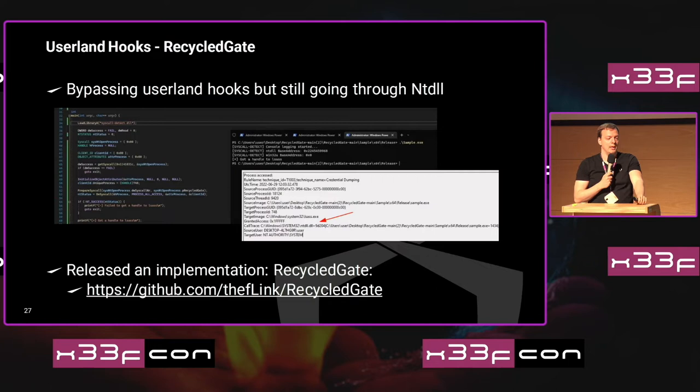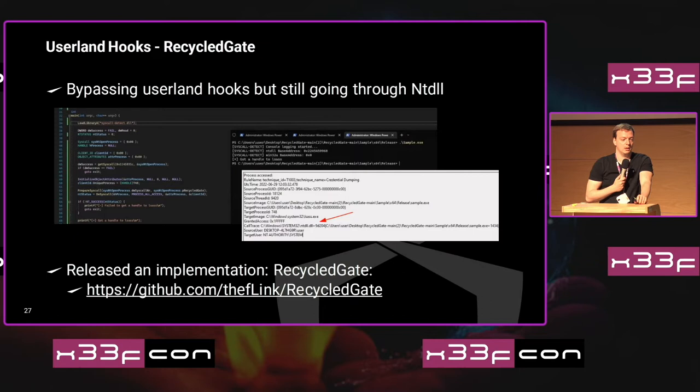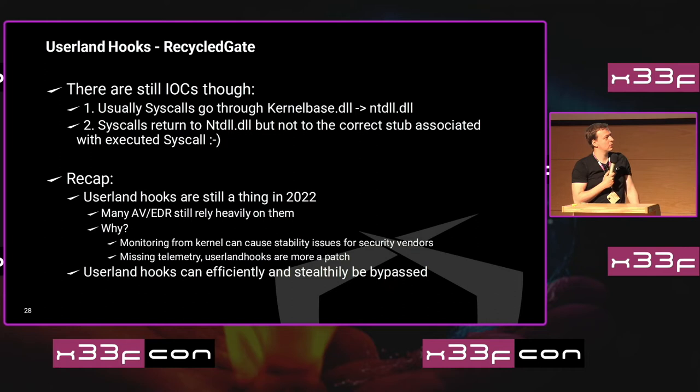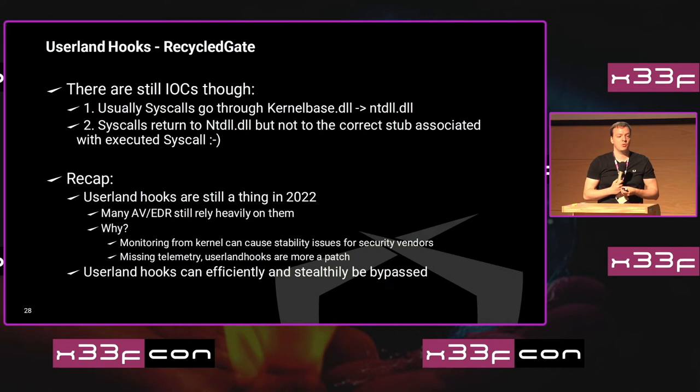I wrote a small implementation for this — you can find it on my GitHub. Using it with the syscall_detect tool at the same time, it's not complaining because the system calls all return to ntdll, and in Sysmon the last module in the call stack is ntdll. There are still some IOCs though: usually system calls go through kernel32.dll and then to ntdll, but here they skip kernel32 — that's the first IOC. The second IOC is that the system call returns to ntdll but not to the correct stub associated with the executed system call. Leveraging Hooking Nirvana might be a way to detect this.